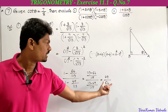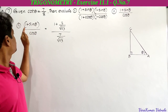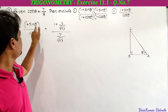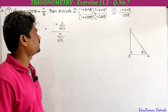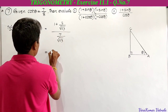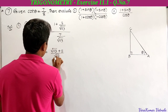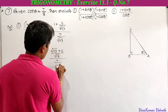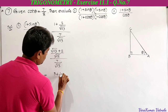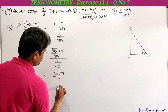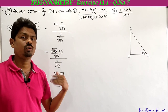Second bit: 1 plus sin theta by cos theta. Sine theta equals 8 by root 113, so 1 plus 8 by root 113, divided by cos theta which equals 7 by root 113. Finding LCM in the numerator gives (root 113 plus 8) by root 113. Dividing by 7 by root 113, the root 113 terms cancel, giving the answer as (8 plus root 113) divided by 7.